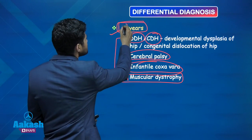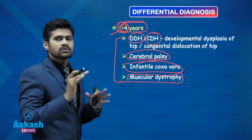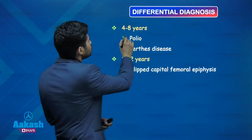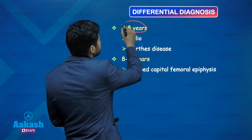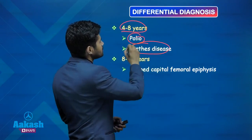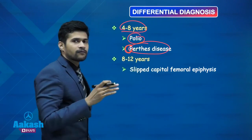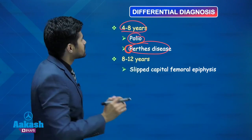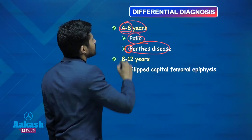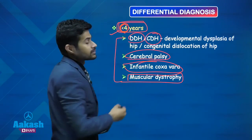Remember this age group because it will help in solving questions. In 4 to 8 years: polio and Perthes. Perthes, as a topic of Pediatric Orthopedics, causes a Limp in 4 to 8 years. Developmental dysplasia causes Limp in less than 4 years.